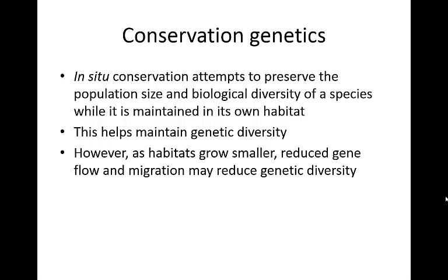In situ conservation attempts to preserve the population size and diversity of a species while it's being maintained in its own habitat. This also helps to maintain genetic diversity. The problem with this technique is that habitats are getting smaller and smaller — more people are being born, we need more places to live and grow food, so habitats tend to be growing smaller. This is reducing gene flow and migration and may reduce genetic diversity. Even forest preserves are separated by houses, so species may not move between them, causing inbreeding within isolated populations.